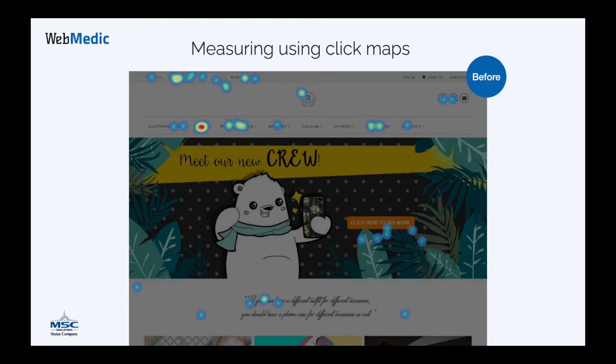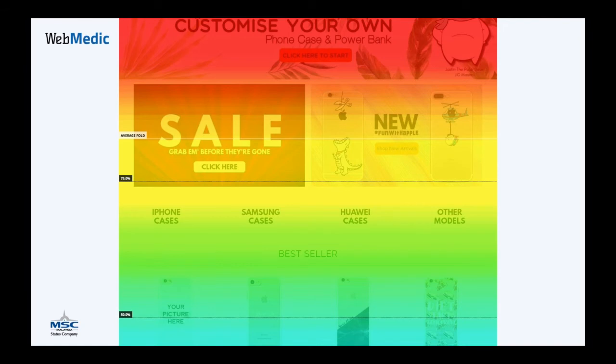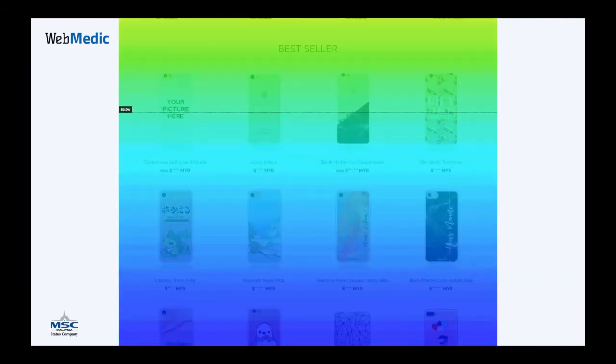Based on these insights, we improved the homepage: a shorter banner, a big sales banner, the latest collaboration on the right side as new arrivals, and the best sellers moved to the top. Based on these improvements, we saw over 70% increase in sales for this customer.